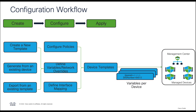The configuration workflow comprises three steps. In the first step, we create a template either from scratch, generate it from an existing device, or export it from an existing template. In the next step, we configure the policies, define the variables and network object overrides, and define the interface mapping. Variables is a new object type which is a placeholder for inline values in the supported configuration. In the last step, the device template is applied to multiple devices and supports variables that can be defined per device to configure various configuration attributes on the firewall.